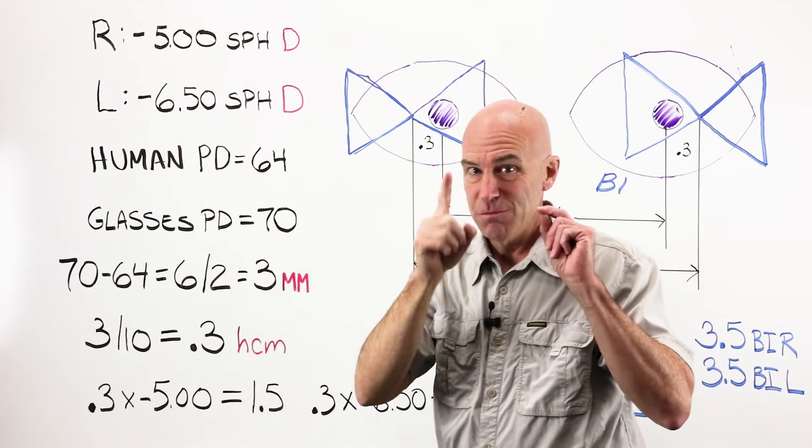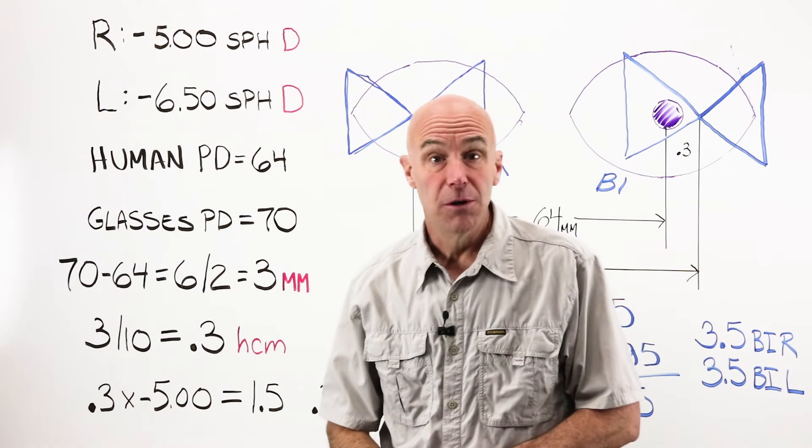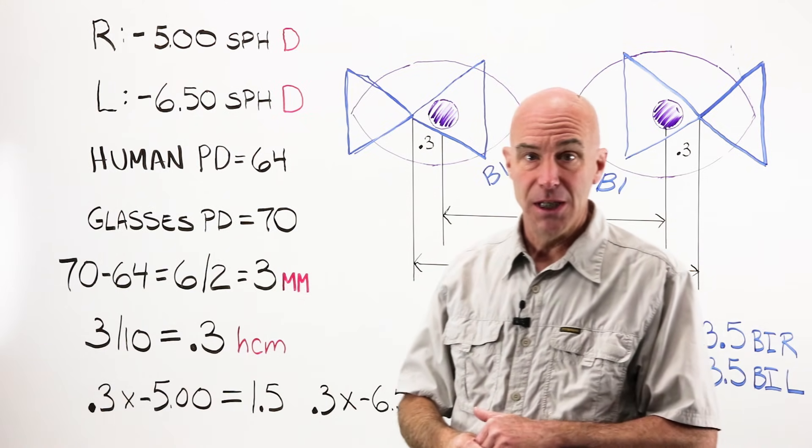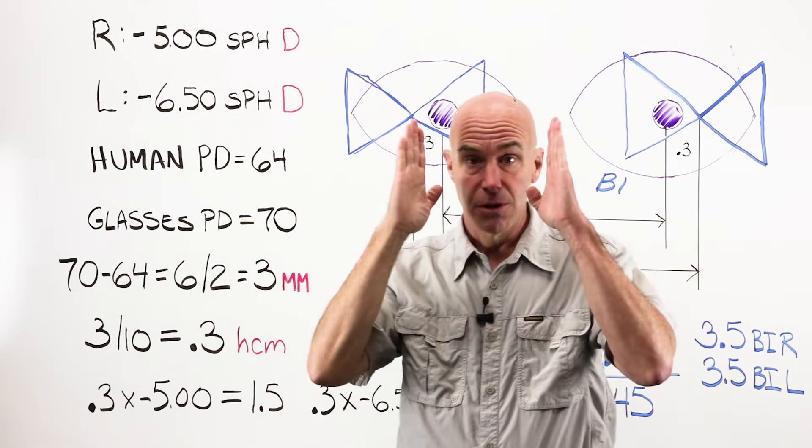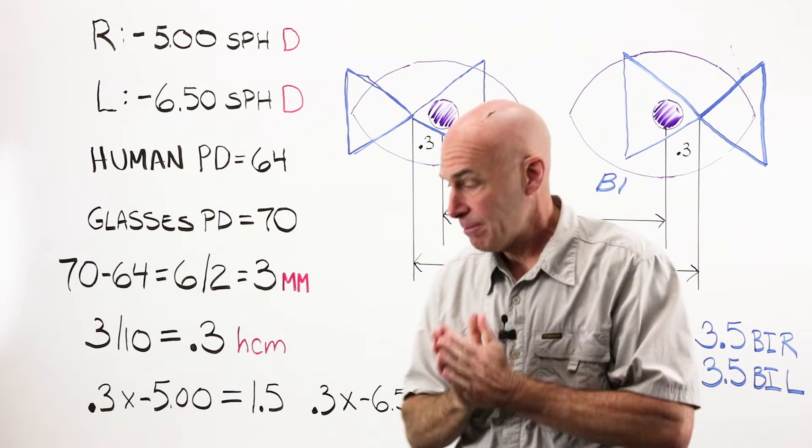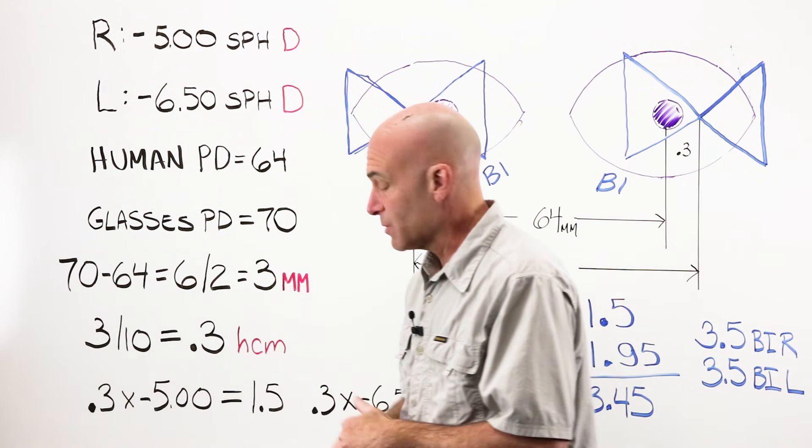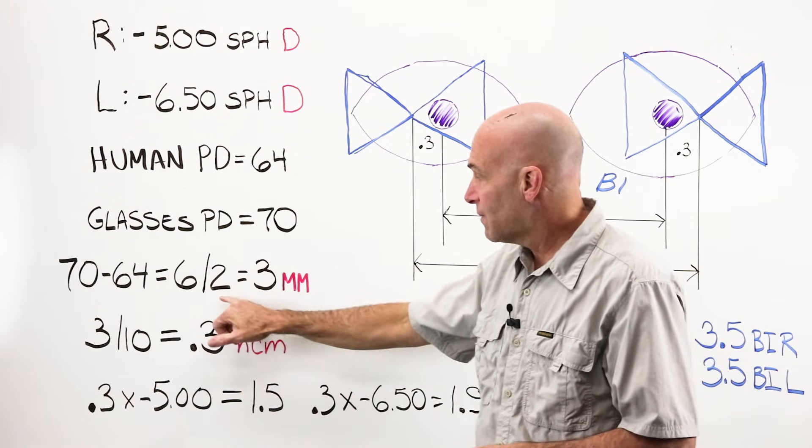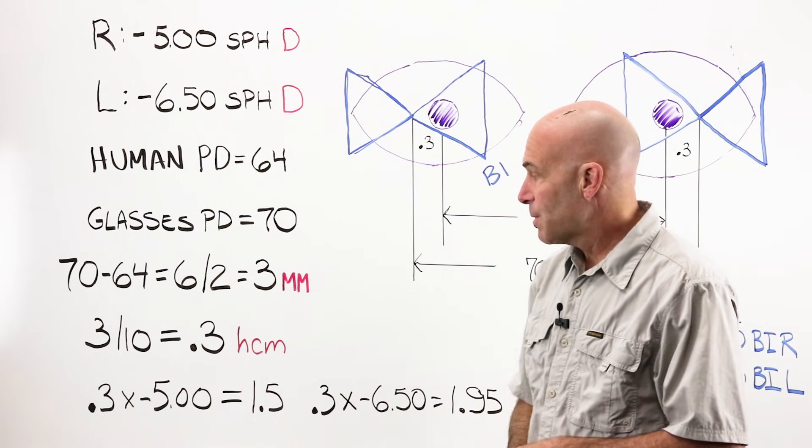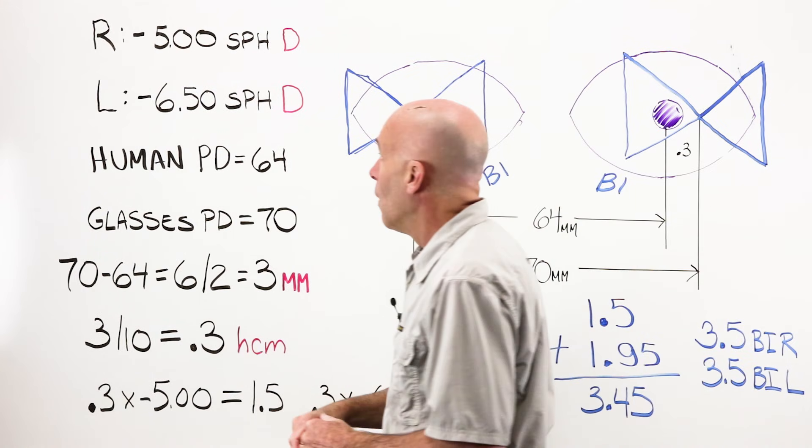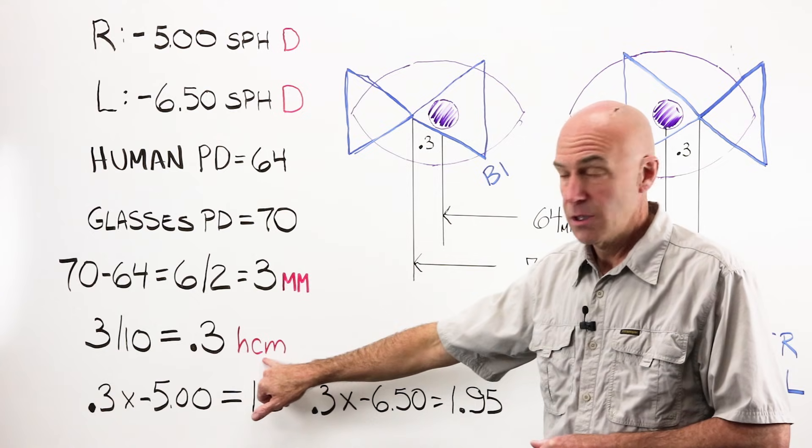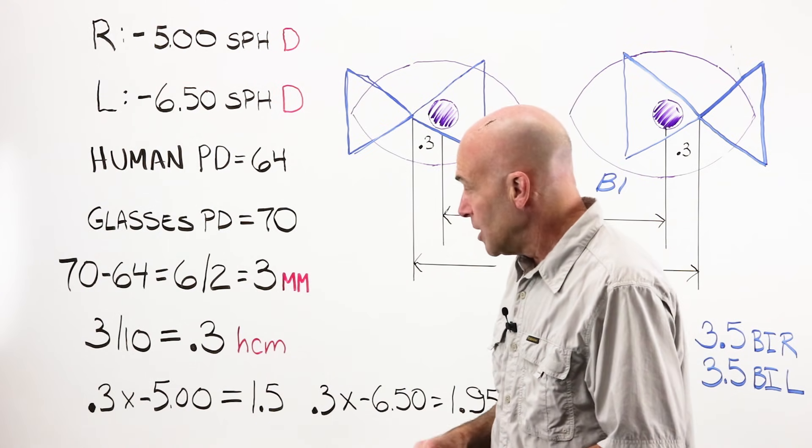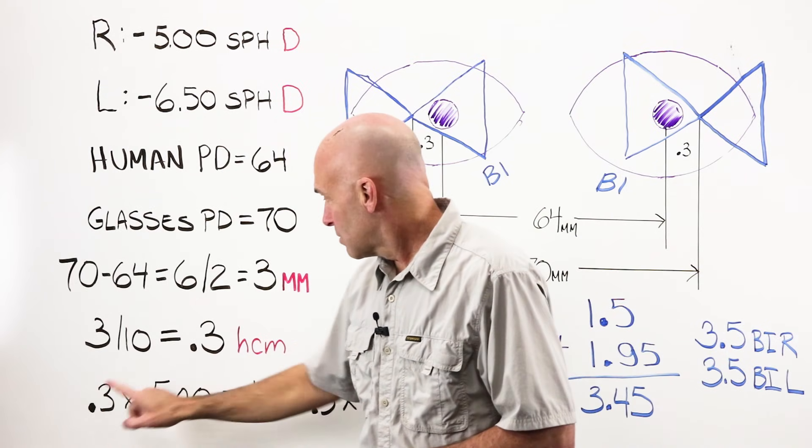My human, my person, remember I can't move my eyes, their eyes are 64 millimeters apart. Their patient PD, 64. The glasses, however, were made with a PD, their optical centers, 70 millimeters apart. They were made wider than my human. If I take my 70 that they were made and subtract my 64, which is my human, I have a difference of six millimeters. If I divide that by two, because I have two eyes, I end up at three millimeters. Prentice's formula works in centimeters, so I'm going to convert that by dividing three by ten, which gives me .3 centimeters.